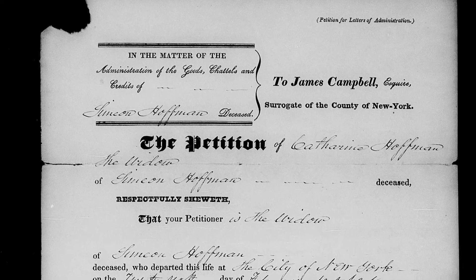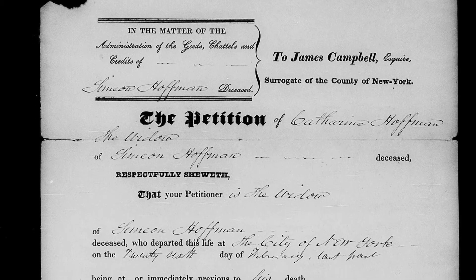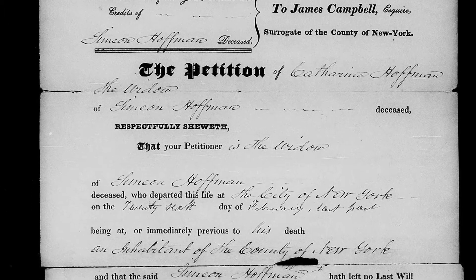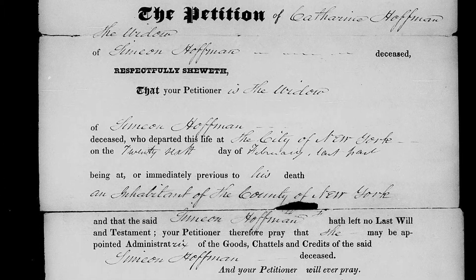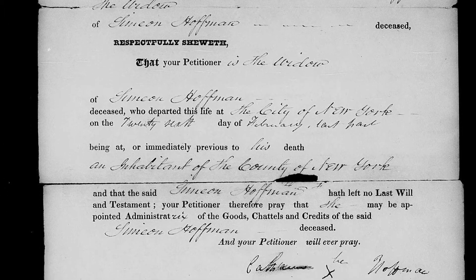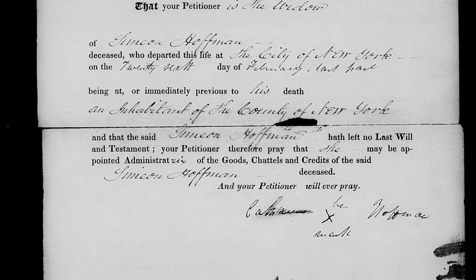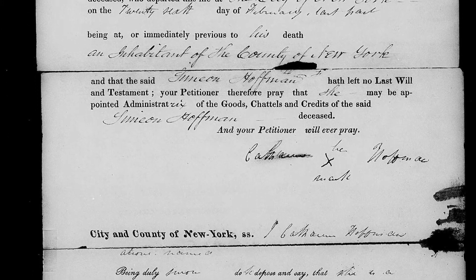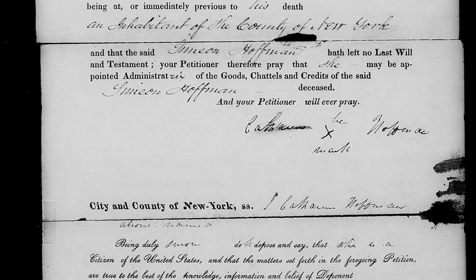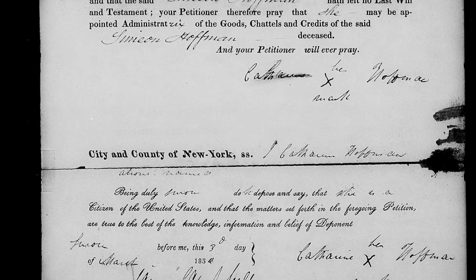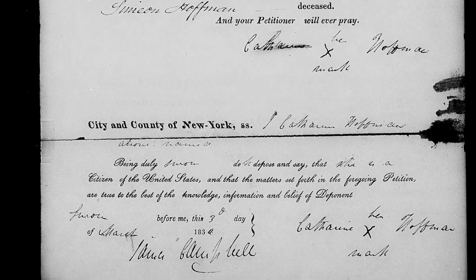Here is a letter of administration. The widow, Katherine Hoffman, was made the executor. This noted that he left no last will and testament. But we still have an executor paper that named his wife — and if we didn't know his wife already, here we have it. So this is an example of somebody not having a will, but we still find a document that's very helpful in finding out more about his family.